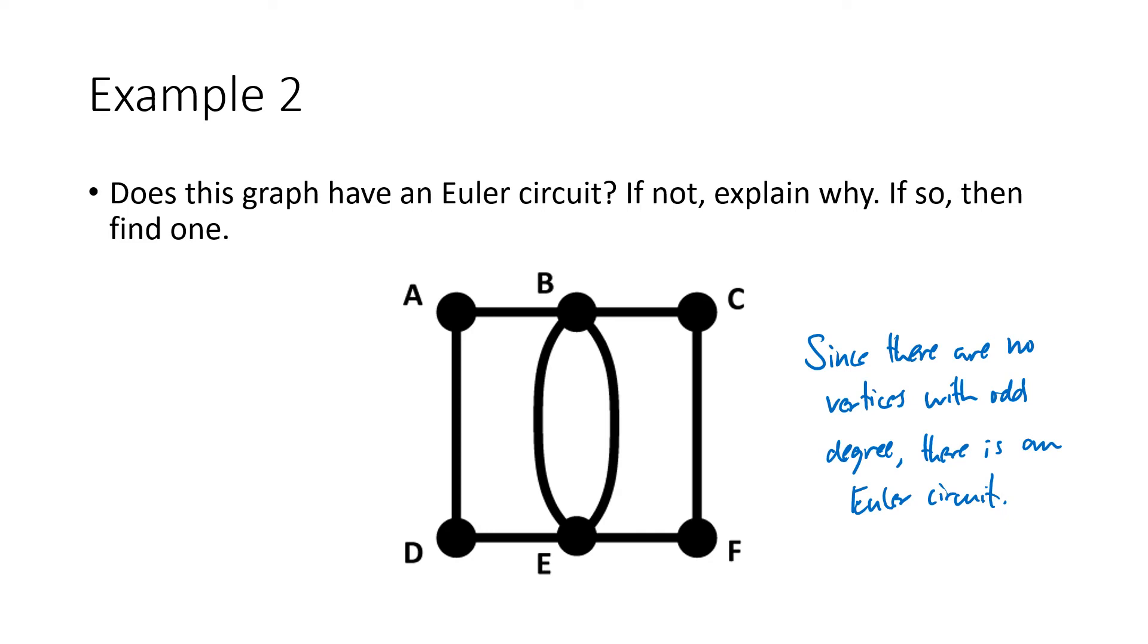So I'm just going to kind of randomly decide to start here at D, and I'm just going to start walking along my vertices. So maybe I'll start and go from D up to A. So my circuit starts from D, and it goes to A. Then I'll go over to B. And then, let's see, I'll go over to C. And then now I don't have any choices. I've got to go down to F. Let's keep going. Now I have to go over here to E, because I don't want to retrace my steps. Now I'll go up to B, back down to E, and then finally back over to D.